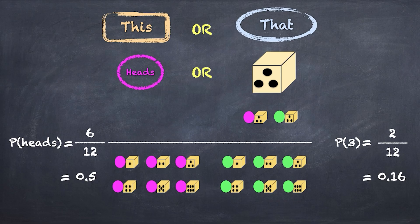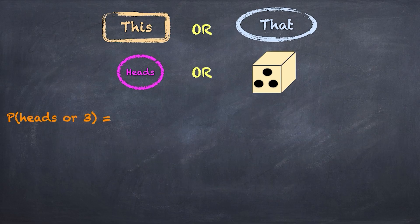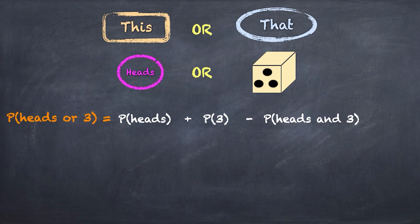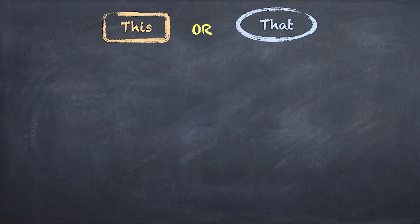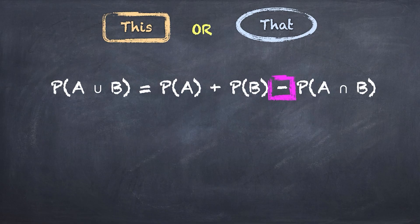Now the question is, can we simply add these two numbers — the 0.5 and the 0.16? The answer is no, because the scenario in which we spin a heads and throw a three is double counted — it's included in both calculations. So to get the probability of flipping a heads or throwing a three, we need to add them together and then subtract that double count, which is the probability of getting a heads and throwing a three. The rule is: the probability of A or B happening is given by adding them together and then subtracting the probability of them both happening. This formula also works for mutually exclusive events, because in that case the probability of rolling both is zero, so you'd simply be subtracting zero.